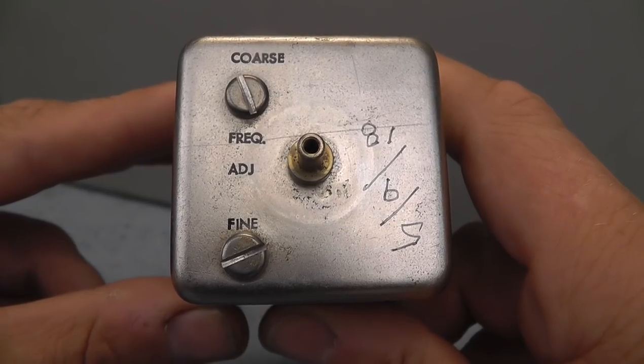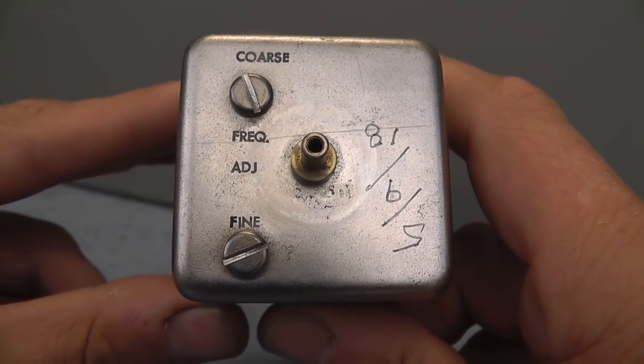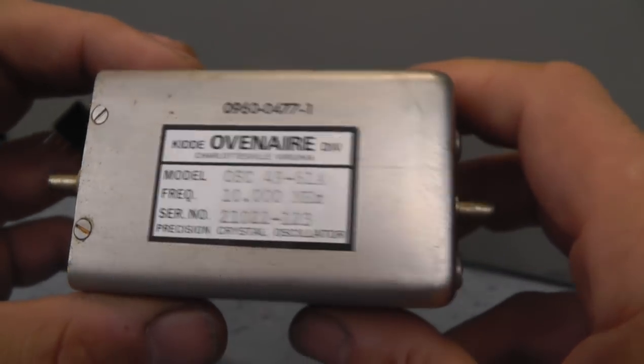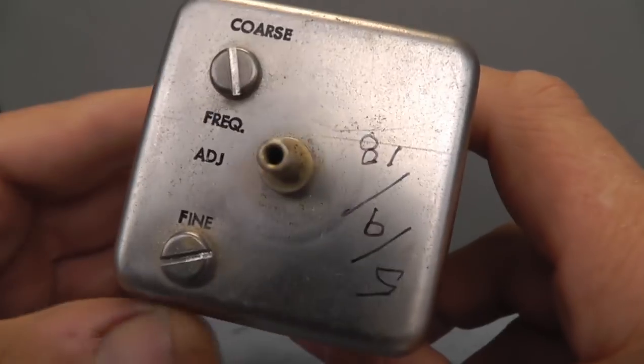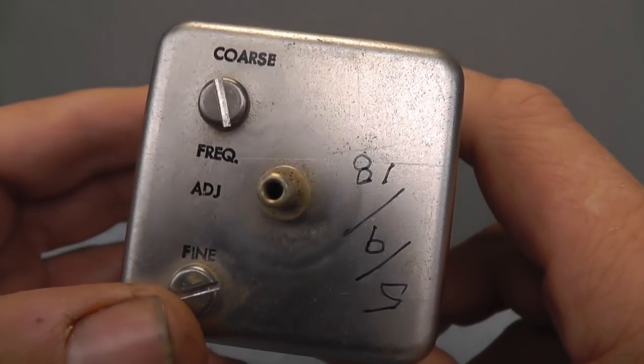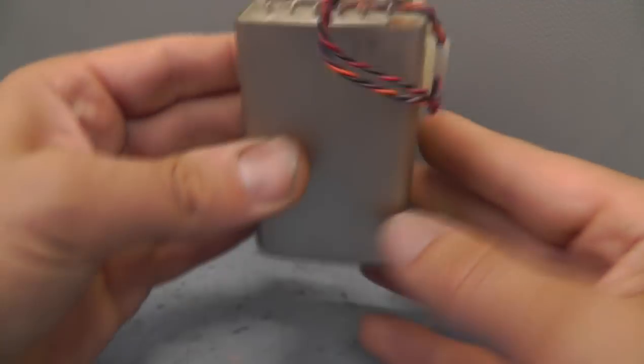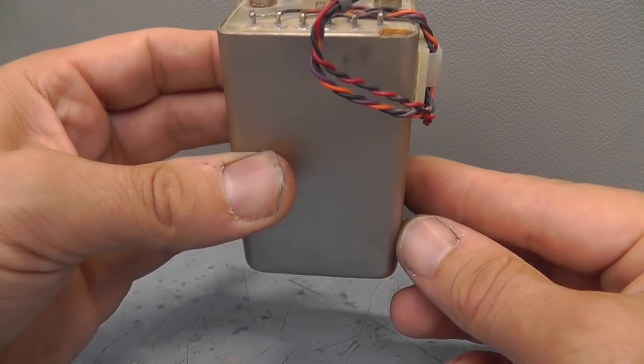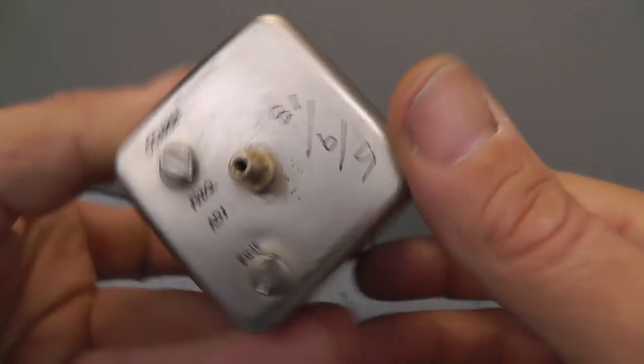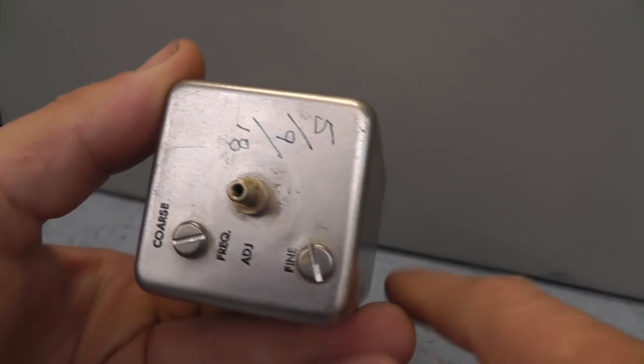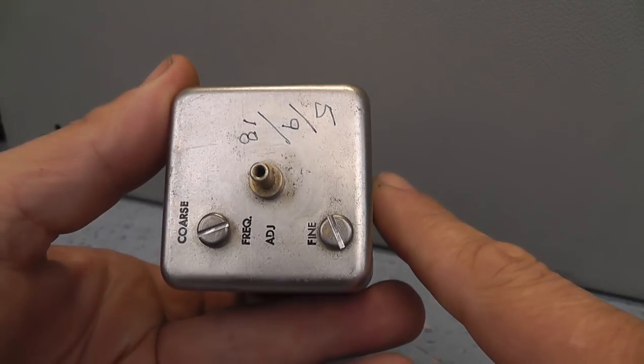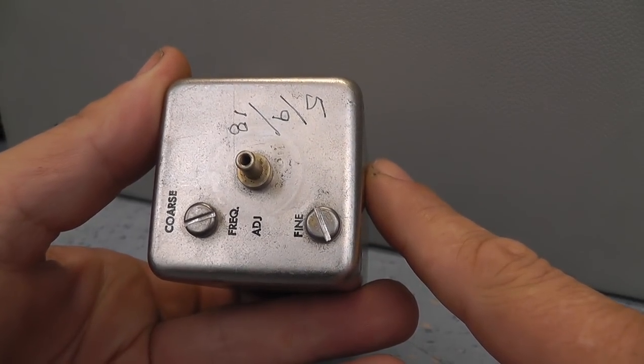We'll use that to trim up the oscillator and get it as accurate as we can. This will normally need probably maybe an hour at least to warm up and ideally we want to be adjusting it in its final resting position which would be like that in the unit. What I plan to do is get it into the unit, power it up, warm it up.